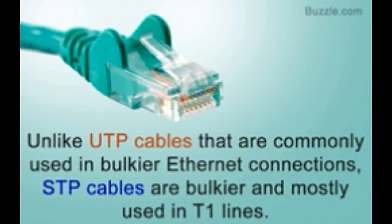Over the years, the discovery that the presence of twisted pairs of wires inside a cable adds to its overall signal-carrying ability is truly a groundbreaking one in the path of cable evolution. Two kinds of twisted pair cables are commonly used today: UTP, unshielded twisted pair, and STP, shielded twisted pair cables, which terminate in almost identical connectors.